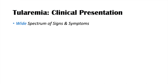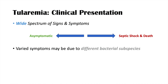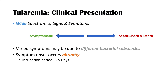Tularemia has a very wide spectrum of signs and symptoms, ranging from asymptomatic to septic shock and death. This often relates to the particular bacterial subspecies involved: Francisella tularensis subspecies tularensis causes a more severe presentation, while the subspecies holarctica is less severe. When symptoms occur, there is an abrupt onset after an incubation period of around three to five days. Symptoms are often nonspecific and systemic — fever, chills, malaise, and fatigue.